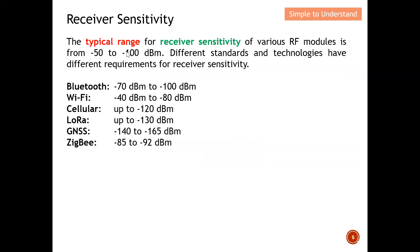Next, I'll go through typical receiver sensitivity ranges for various RF modules. The typical range is from about -50 to -100 dBm. Technologies covered include Bluetooth, Wi-Fi, cellular, LoRa, satellite communication such as GNSS/GPS, and Zigbee. GNSS/GPS has the best receiver sensitivity because satellite communication is many kilometers away, so the receiver must be designed very robustly with sensitivity as low as possible. Wi-Fi, by comparison, has the worst receiver sensitivity in this group.